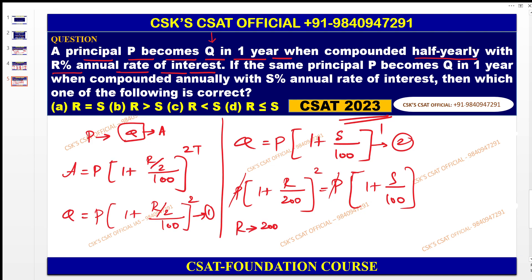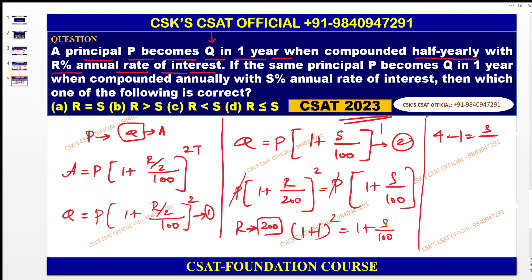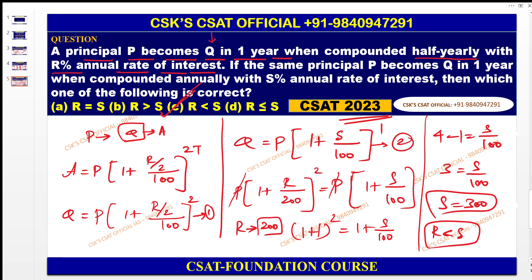Let R = 200 for easy simplification. Then (1 + 200/200)² = (1 + 1)² = 2² = 4. So 1 + S/100 = 4, which gives S/100 = 3, so S = 300. Since R = 200 and S = 300, R is less than S. Therefore the answer is option C.